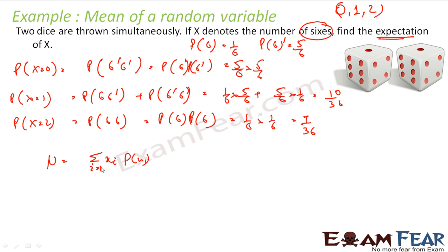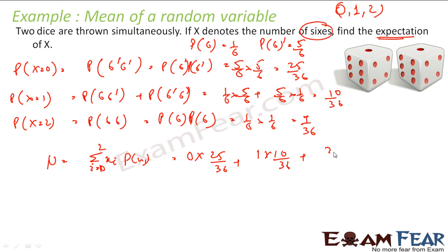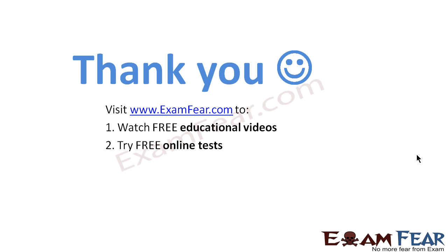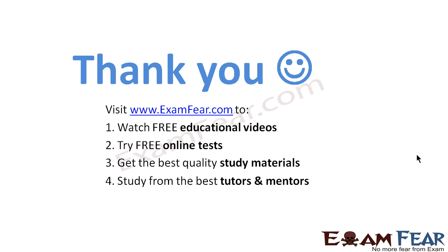So mu = sigma xi times p(xi), with i from 0 to 2: 0 times 25/36 plus 1 times 10/36 plus 2 times 1/36. Solving this gives 1/3. The mean number of 6s when two dice are thrown is 1/3. Thank you. Visit examfear.com to watch free educational videos, try free online tests, get the best quality study materials, and study from the best tutors and mentors.